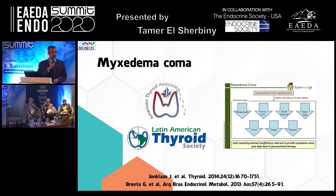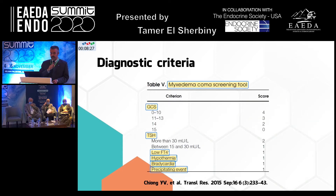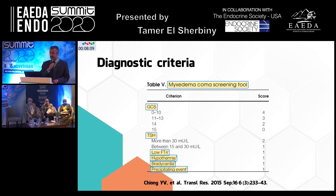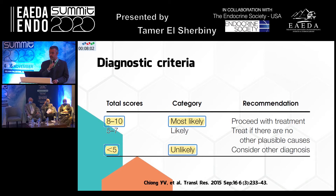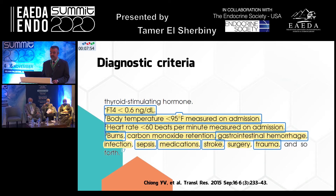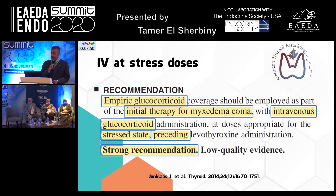The third indication for glucocorticoids is their use in myxedema coma. We now have two sets of diagnostic criteria for myxedema coma. This scoring system depends on the Glasgow Coma Scale, TSH being more or less than 30, low T3/T4, hypothermia, bradycardia, or the presence or absence of a precipitating event. Based on the cumulative score, you arrive at a likely or unlikely diagnosis of myxedema coma. The American Thyroid Association recommends that empiric glucocorticoids should be employed as the initial therapy for myxedema coma using intravenous glucocorticoids at stress doses — a strong recommendation.